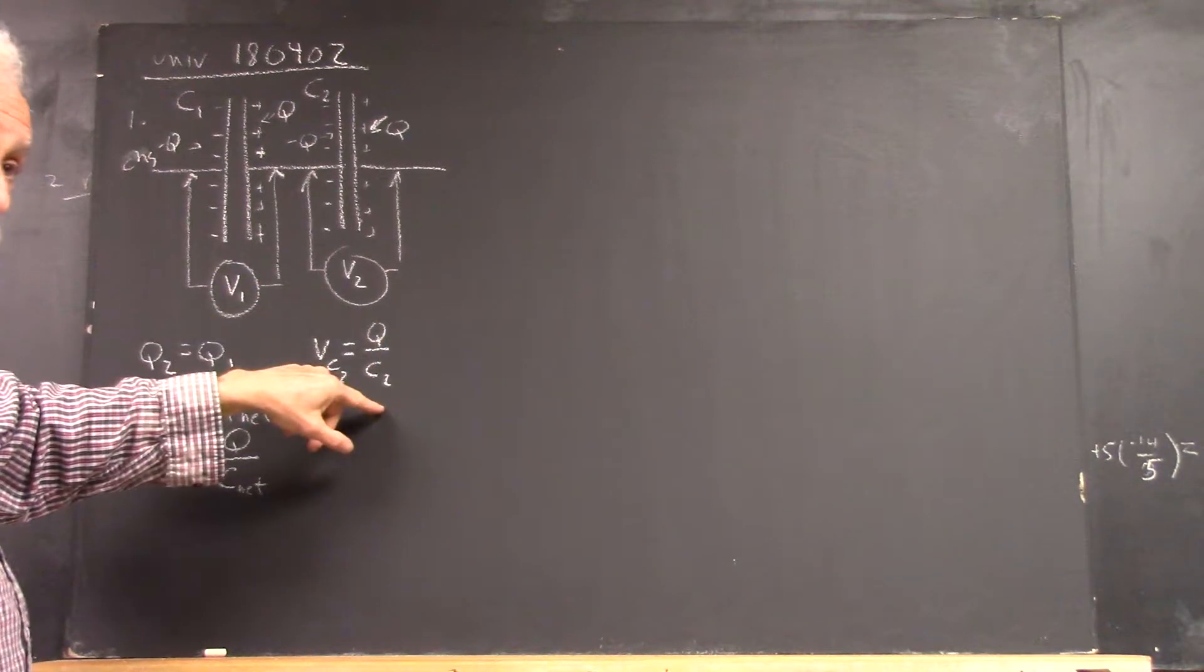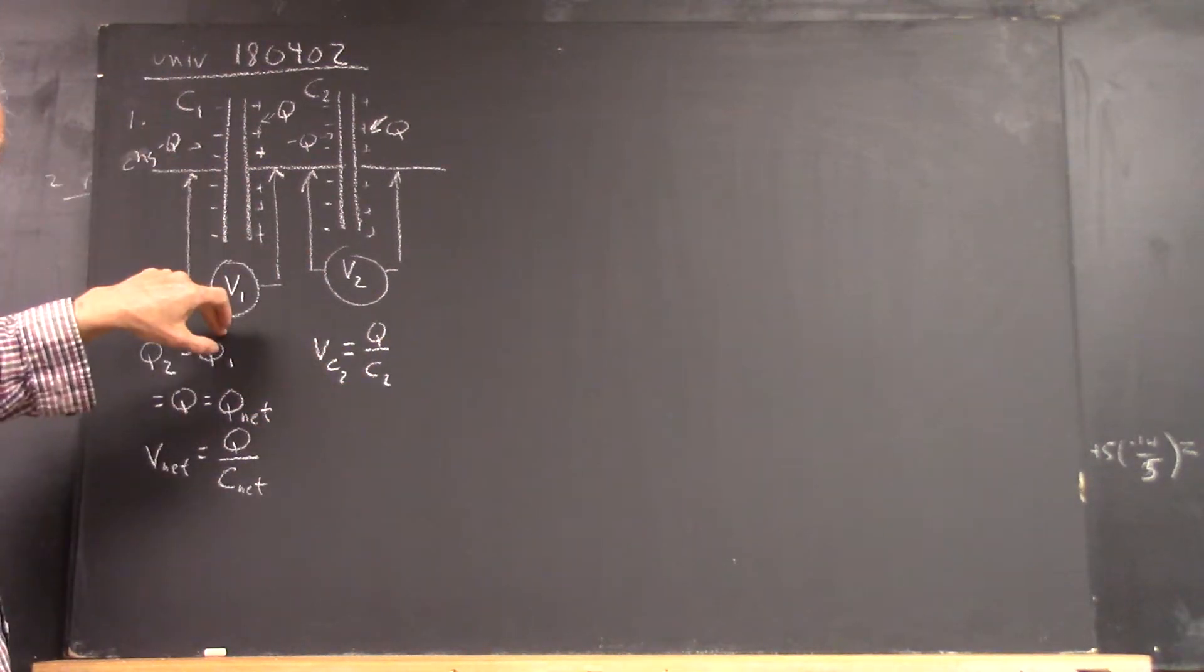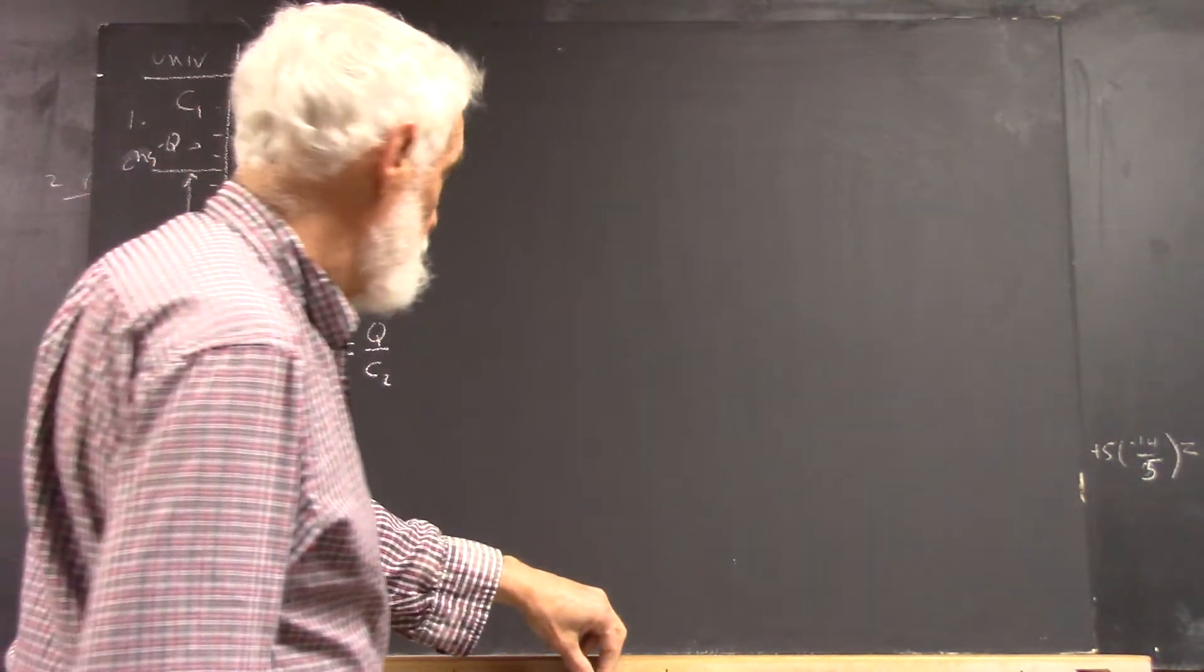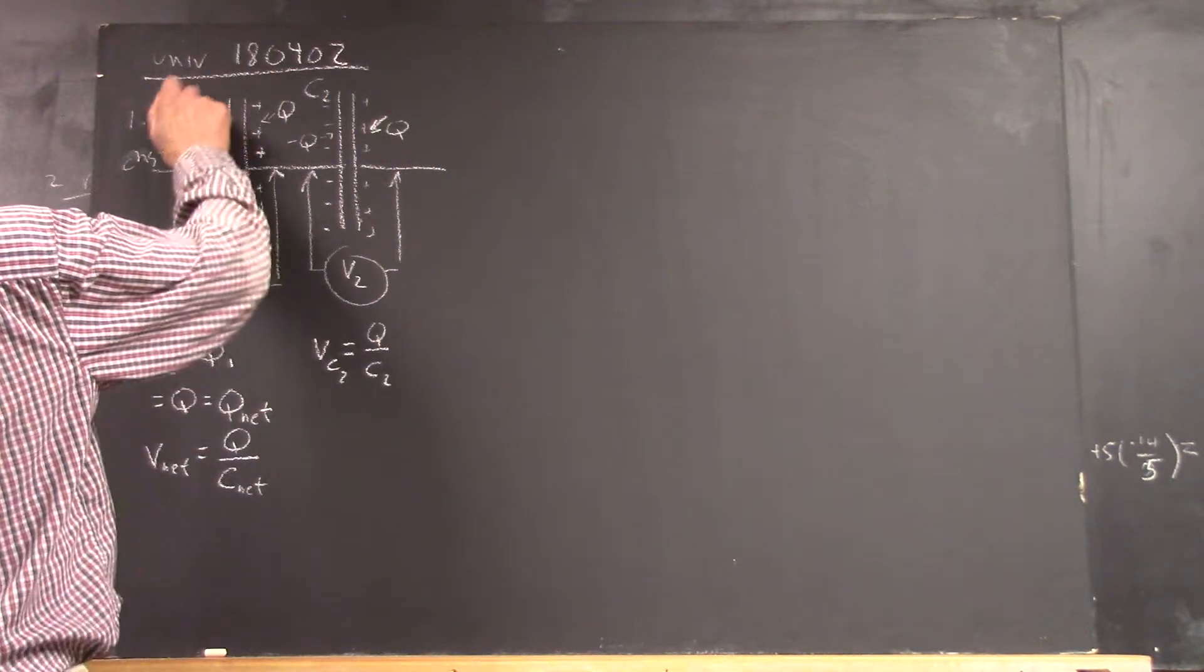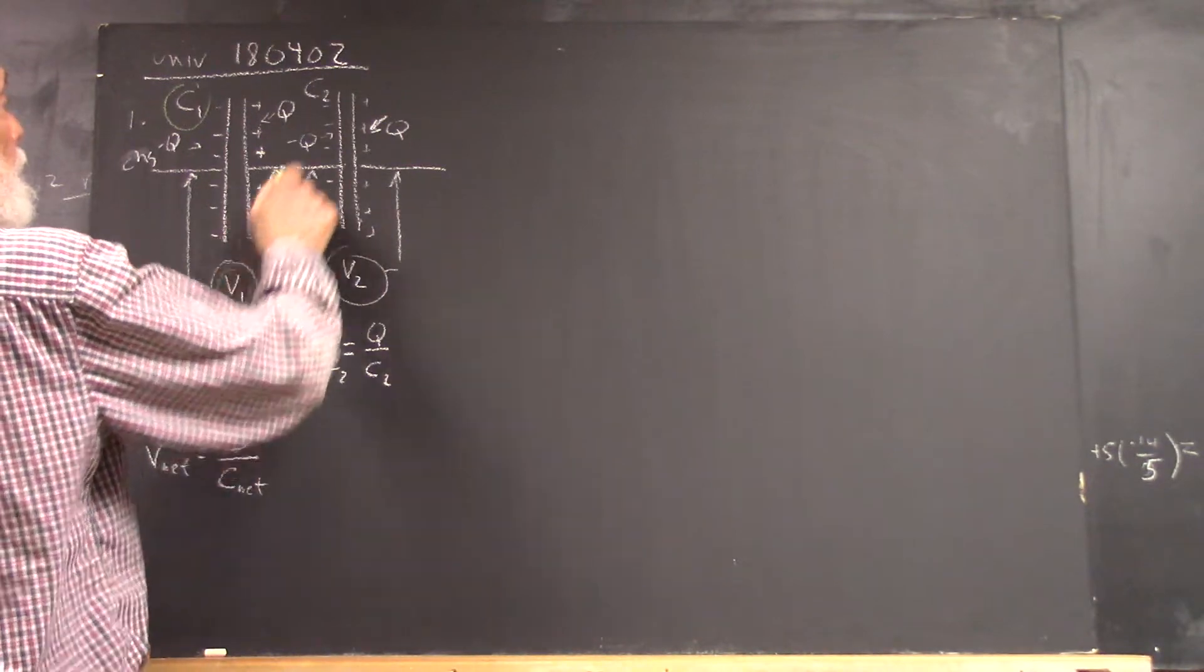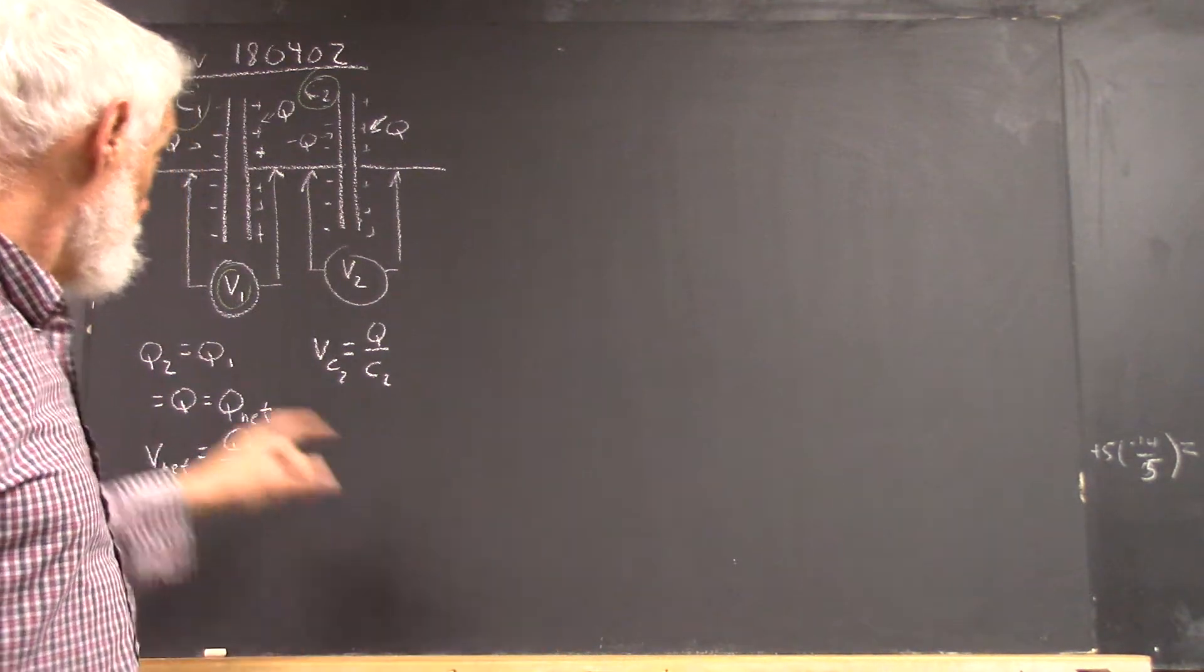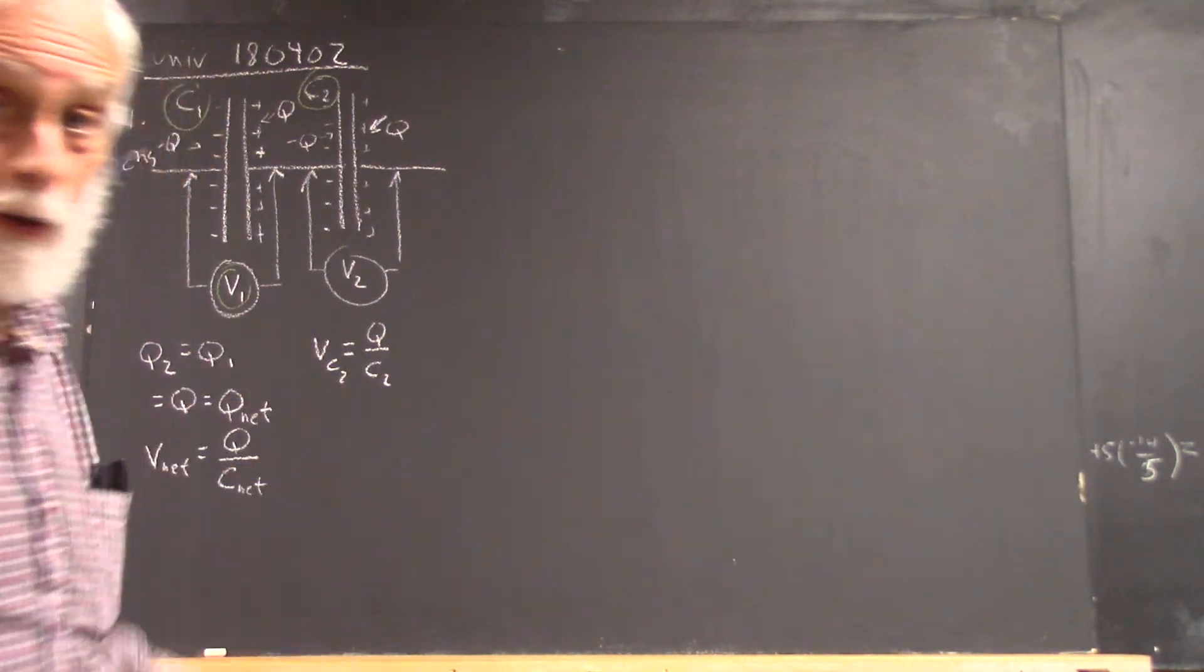So this can come down to our initial quantities. And let's just help focus with a little circle around this, this, and this, because these are the quantities in terms of which we want to write C net. Well, I would start there and then see how you can put those together.